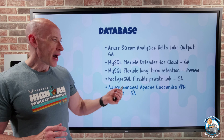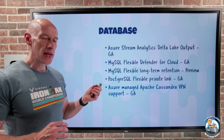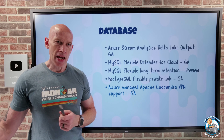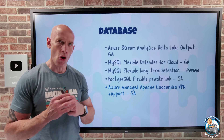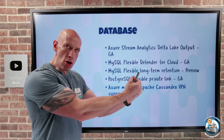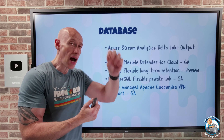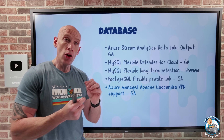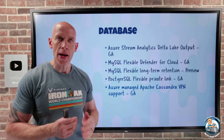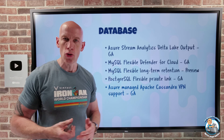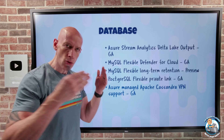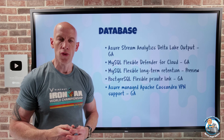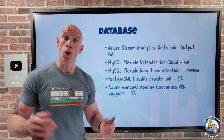Azure Managed Apache Cassandra now has VPN support in GA. This can help alleviate data exfiltration concerns. All of the egress going to other endpoints — for example, other Azure services — can now go through a single endpoint that I can govern. Behind the scenes it's using private link, but now I can have a single endpoint through which all external communications flow, giving me tighter control.